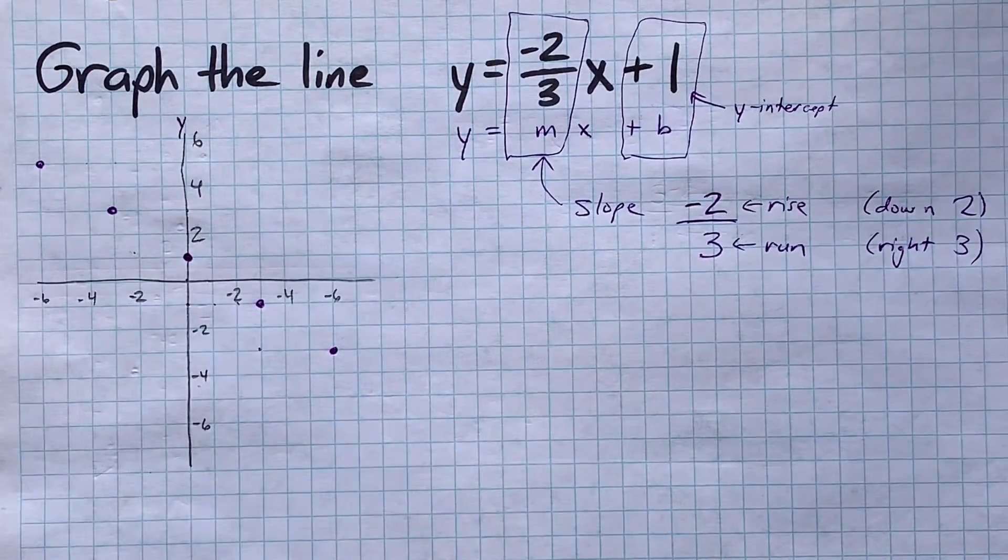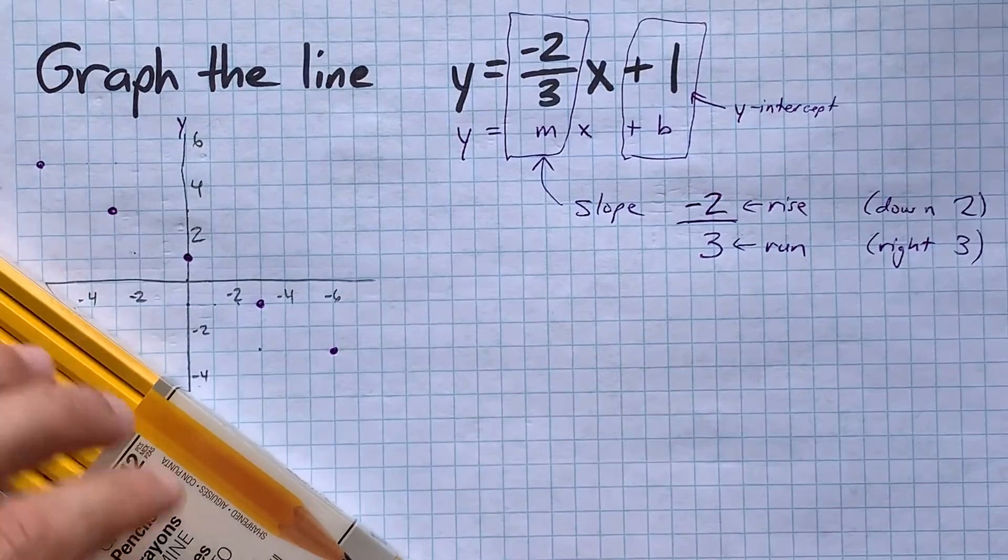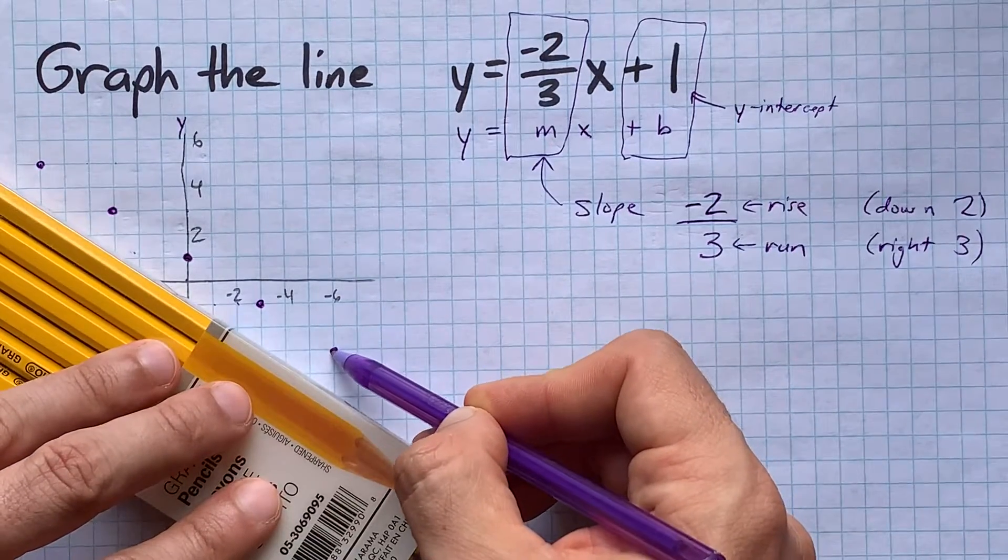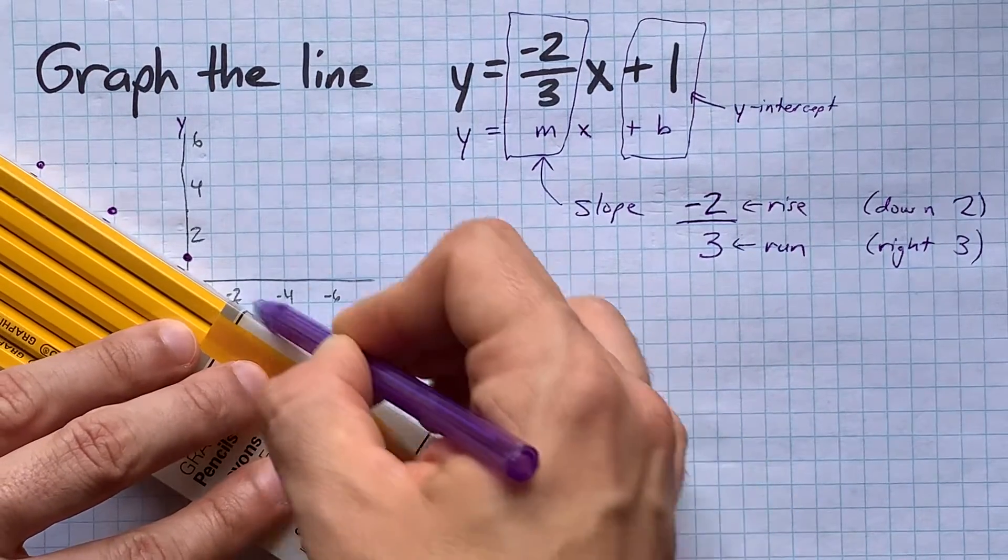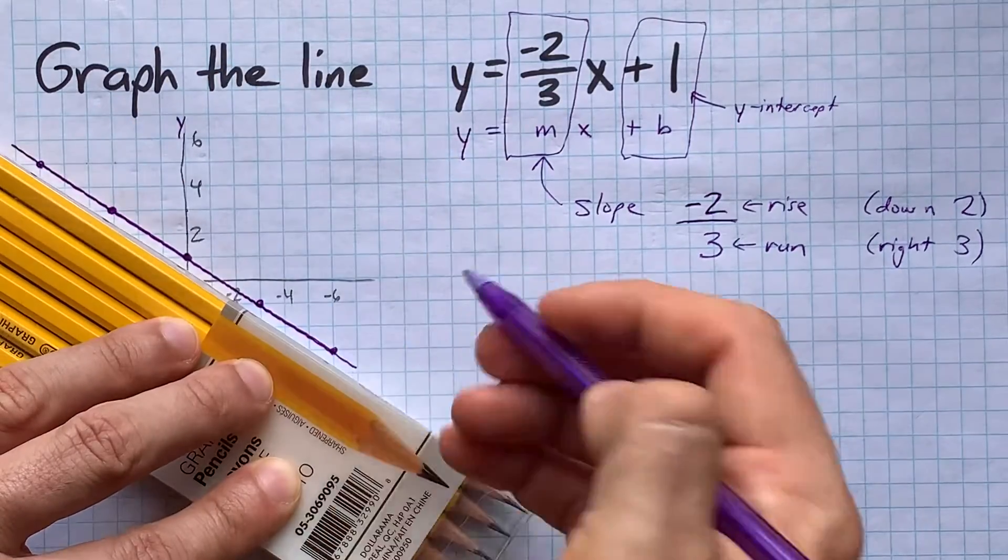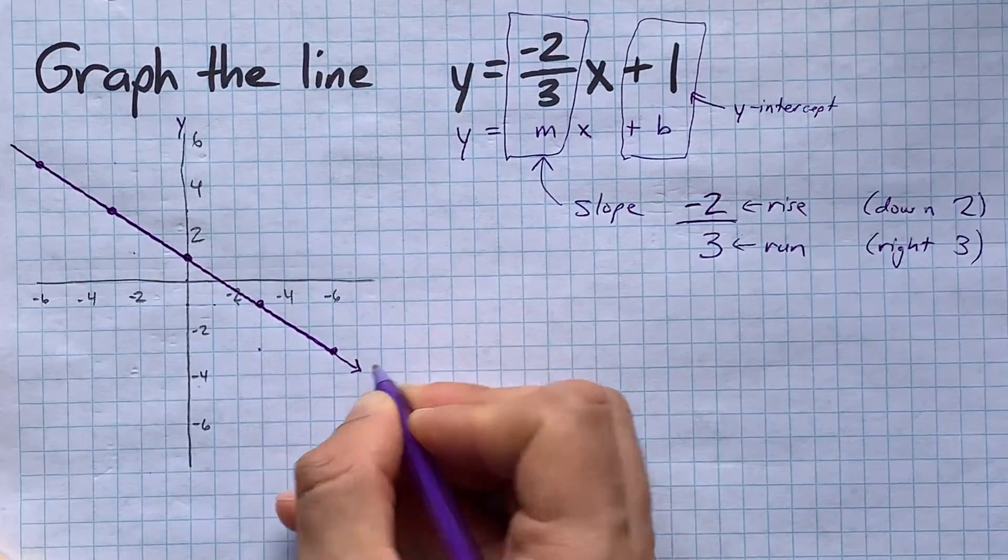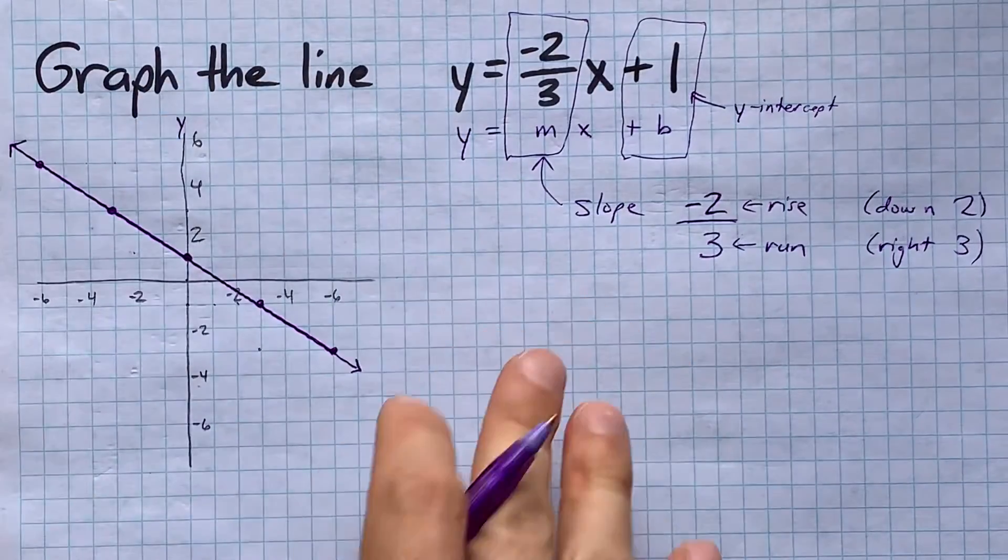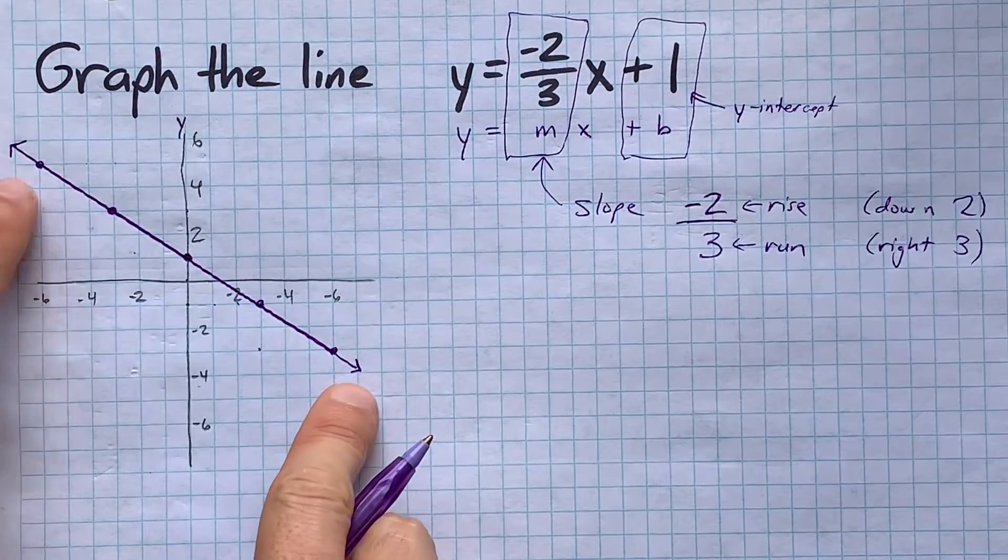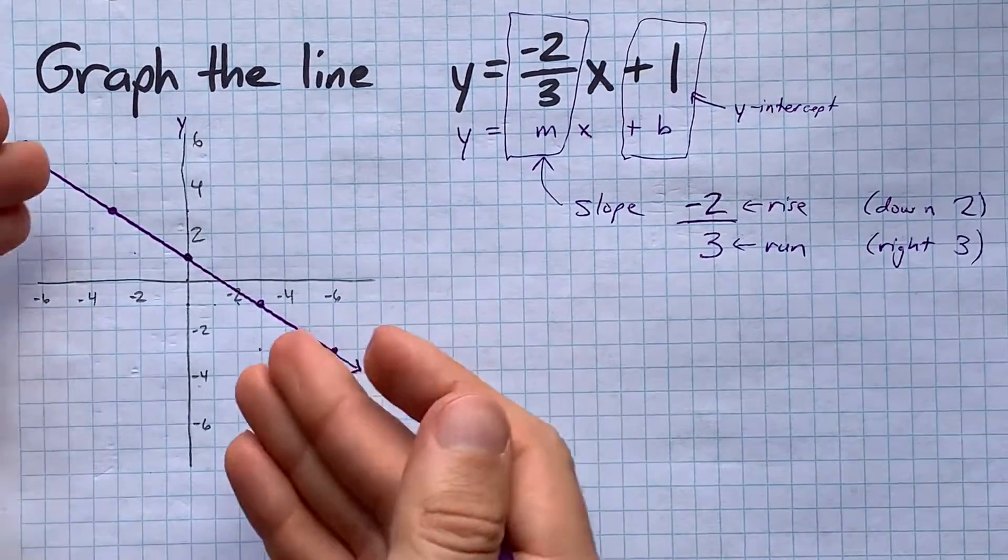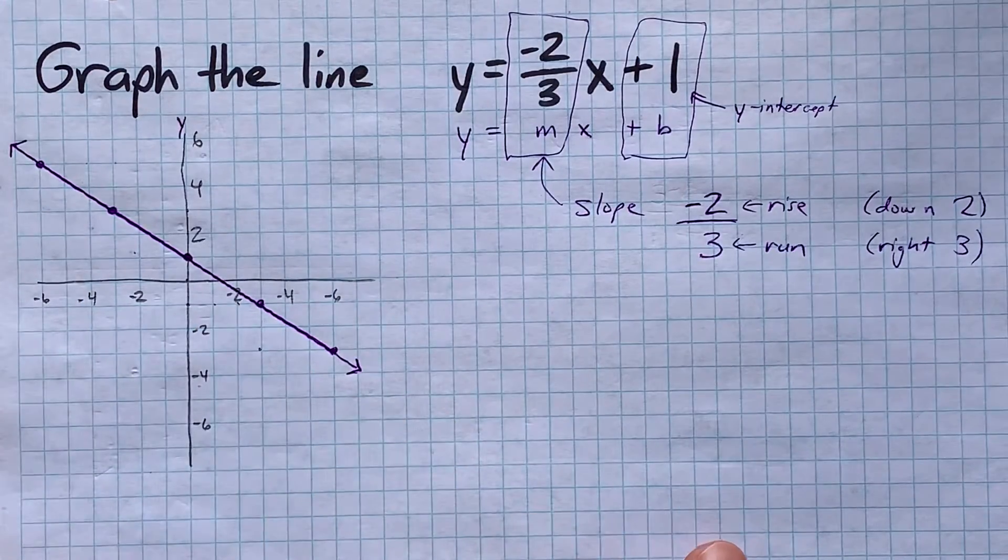Cool. Those do look like they lie on a line. You're supposed to have a ruler or something here. We're going to draw a straight line through all those points. There we go. If your straight line doesn't go exactly through all the points, then you may have just counted wrong. So double check. And I put arrows at both ends because lines, by definition, go forever in both directions.